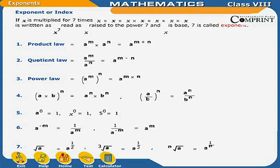Rule 7: Under root A is equal to A raised to the power 1 upon 2. The cube root of A (3 radical A) is equal to A raised to the power 1 upon 3. More generally, the Nth root of A (M radical A) is equal to A raised to the power 1 upon N.